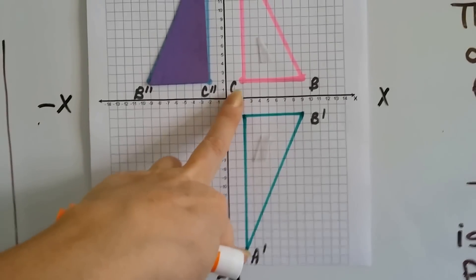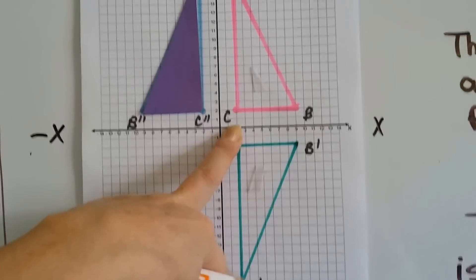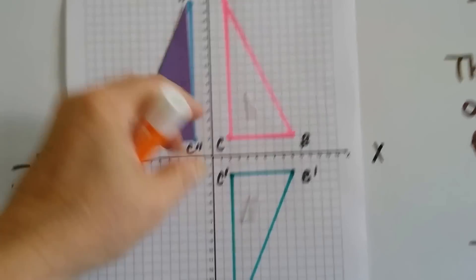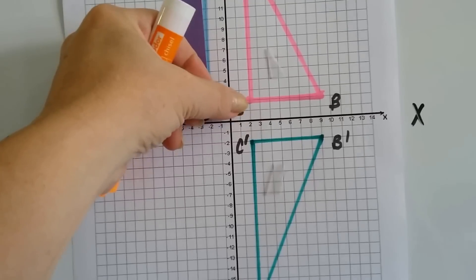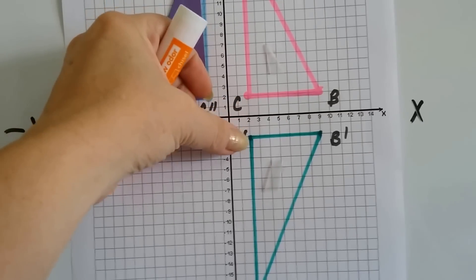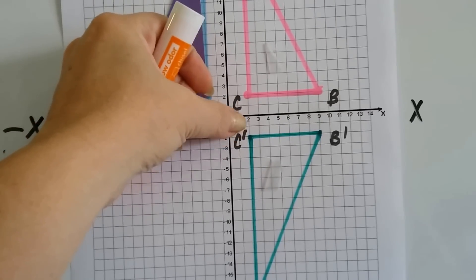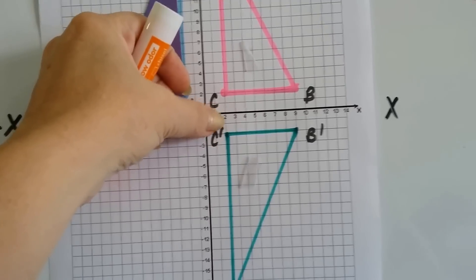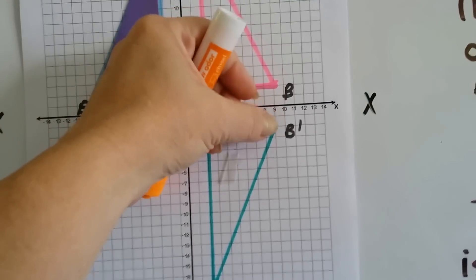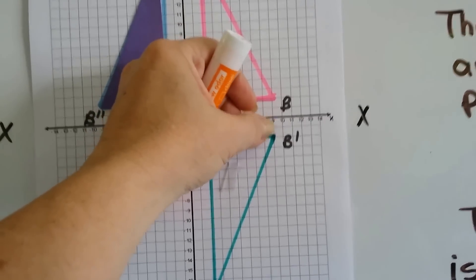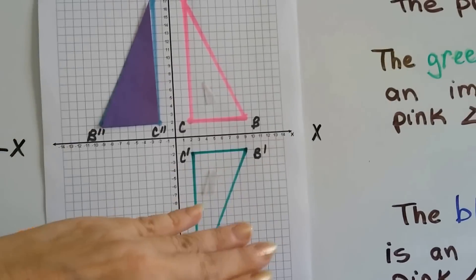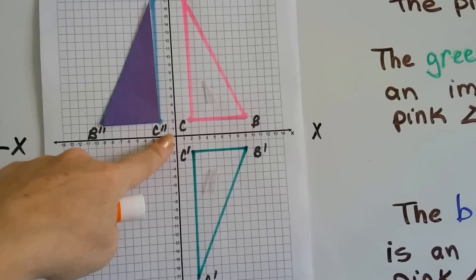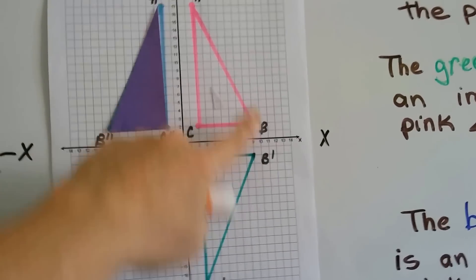It's the same distance from the x-axis here as it is here. And look, C is two squares away from the x-axis, and C prime is two squares away from the x-axis. And B is two squares away, and B prime is two squares away. It's exactly the same distance across this line of reflection for both of them.